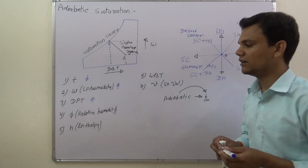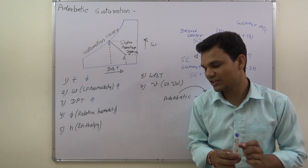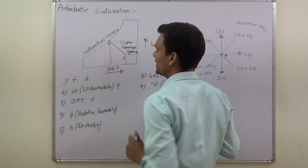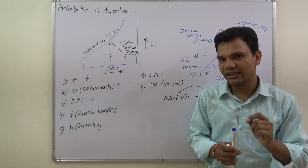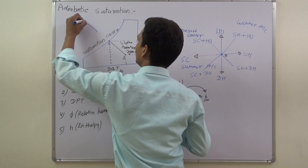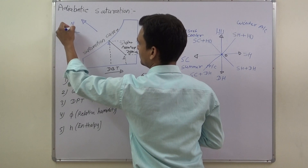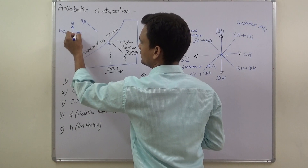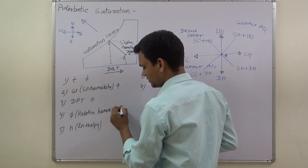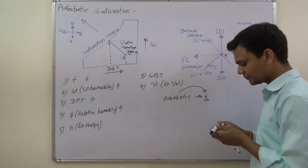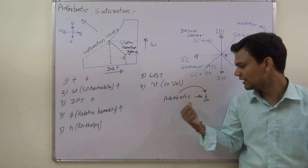Next, what will be the effect on relative humidity? As we reach the saturation curve, the air becomes 100% humidified. In the superheated region, the air is unsaturated; when we reach the saturation curve, the air is 100% humidified. The direction of increasing relative humidity is towards the northwest direction. So relative humidity of the air will increase. The effect on enthalpy is nothing — enthalpy remains constant during the process.